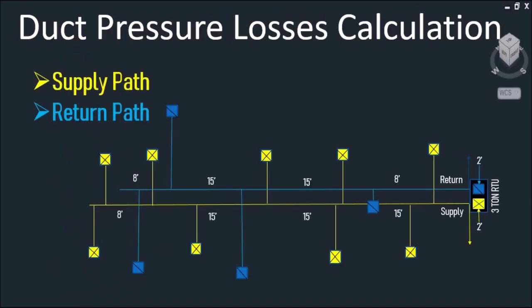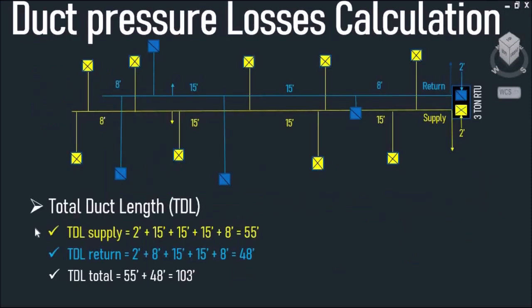The first thing we have to do is measure and calculate the total duct length of our supply including our return duct along a critical path. As you can see, I've drawn a single line duct diagram showing the total length of our supply and return duct. The supply duct is 2 feet plus 15 feet plus 15 feet plus 15 feet plus 15 feet plus 8 feet, and the return duct is 2 feet plus 8 feet plus 15 feet plus 15 feet plus 8 feet.